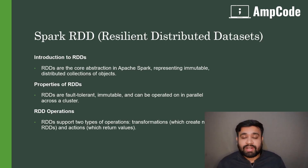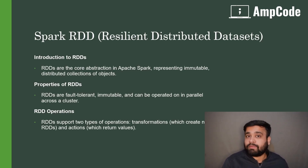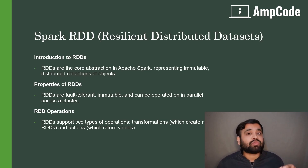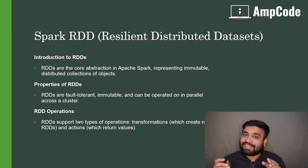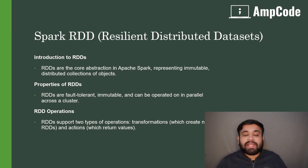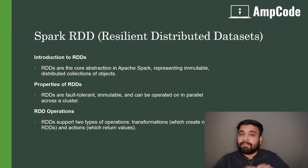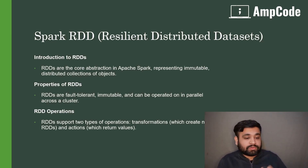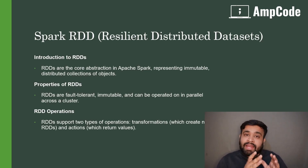RDDs are distributed across the cluster — similar to HDFS, where a file gets split and stored across nodes with fault tolerance through replicas of the same file present on many clusters, depending on the replication factor. Similarly, RDDs are stored in such a way that they can recover from failures.